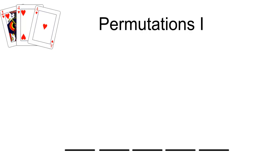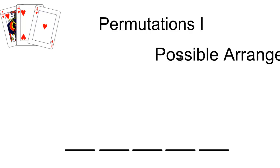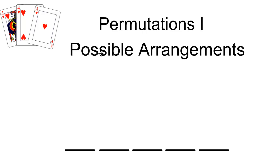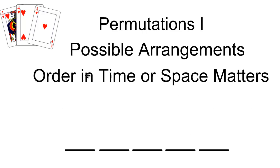We're going to be looking at permutations. Permutations refers to the possible arrangements of objects. When we're talking about permutations, order in time or in space matters.